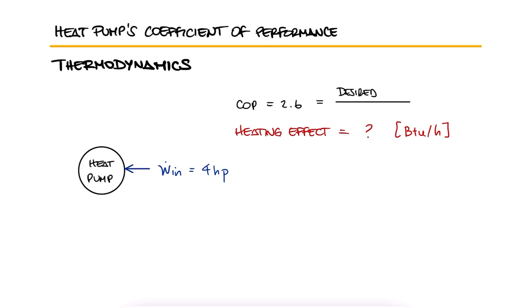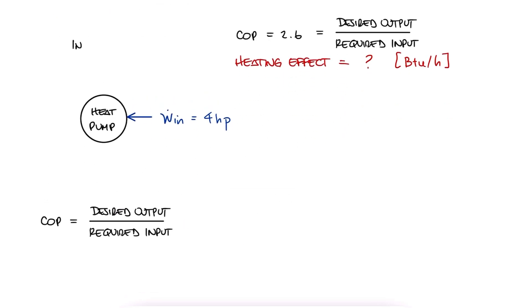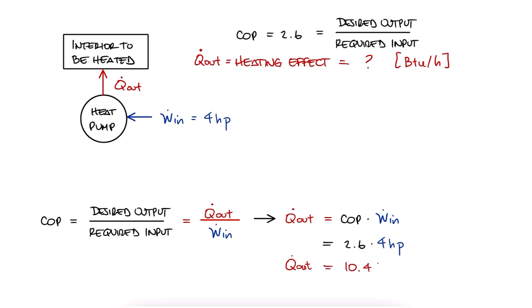What we do here is start with the COP definition, and notice that the heating effect is Q.out, and the horsepower is the W.in. We solve for Q.out, substitute W.in and the COP value, and find that the heat provided to the space is 10.4 horsepower.